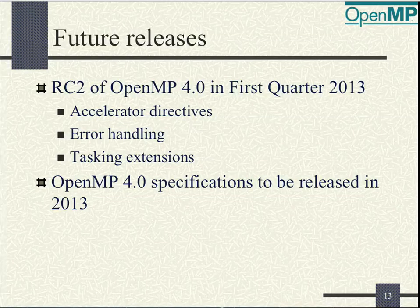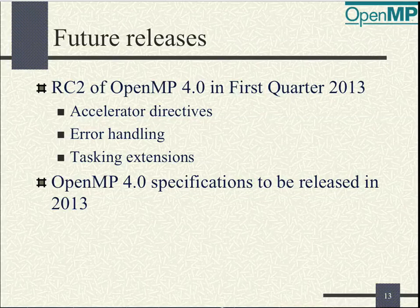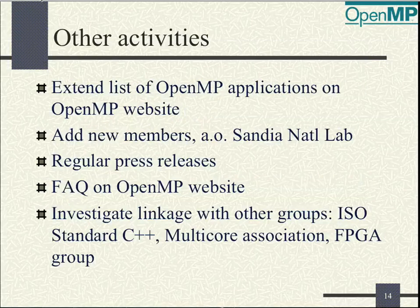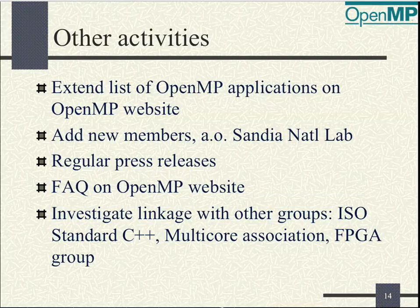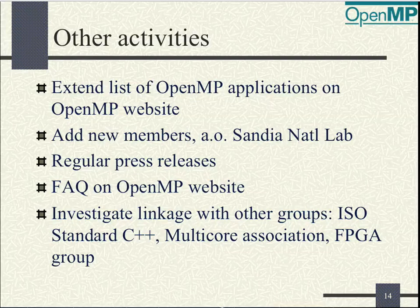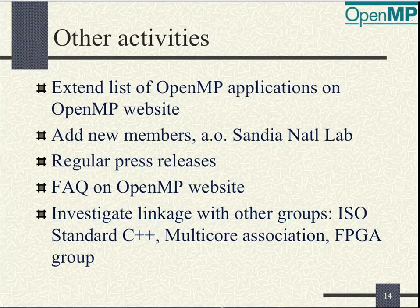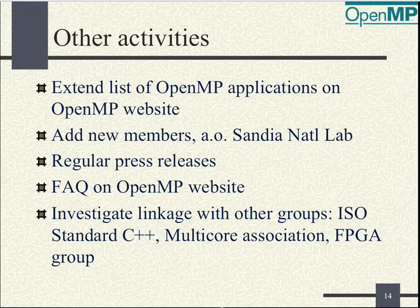OpenACC was also developed to hold the IP and to beta test the OpenMP accelerator implementation. The OpenMP aim is to merge with OpenACC in the future — in time, it will be folded back into OpenMP 4. OpenMP also plans releases in 2013: a second release candidate of OpenMP 4 in the first quarter, which will include accelerated directives, error handling, and tasking extensions. The aim is to release the OpenMP 4 final specs in 2013, which will include the accelerated extensions and all the extensions of the release candidate as well.